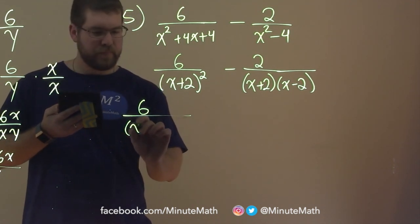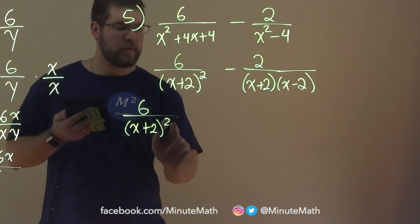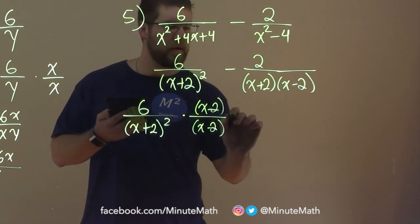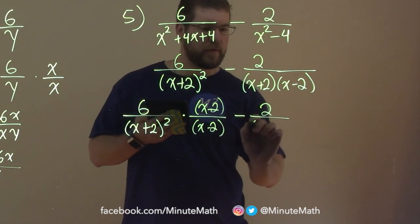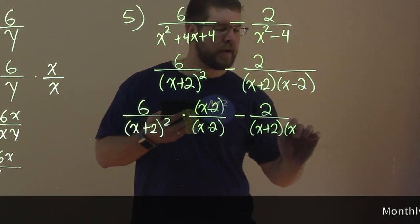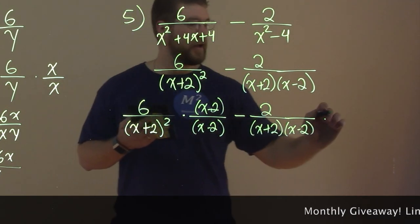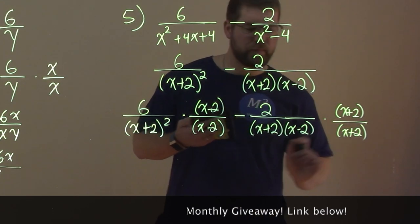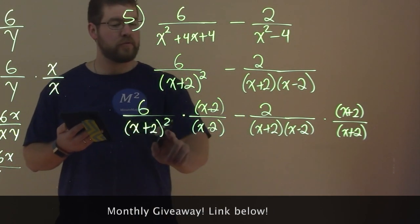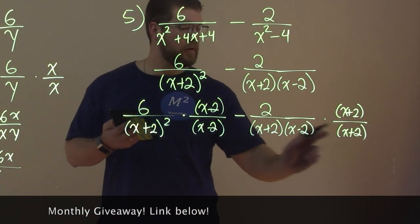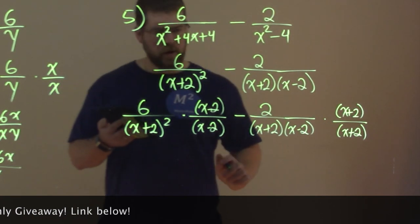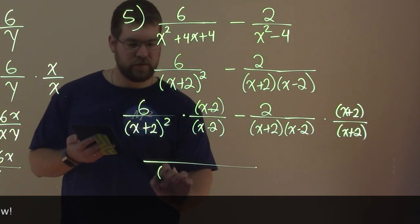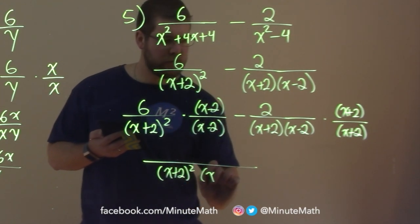So let's rewrite it and show that step. And I'm going to write it like this. So remember, squared means there's 2 of them here. And we're going to multiply this by x minus 2 over x minus 2. Subtraction here. We have 2 over x plus 2 times x minus 2. And we multiply it again by an x plus 2 over x plus 2. So now we have a common denominator, x plus 2 squared times x minus 2. So let's make a common denominator.